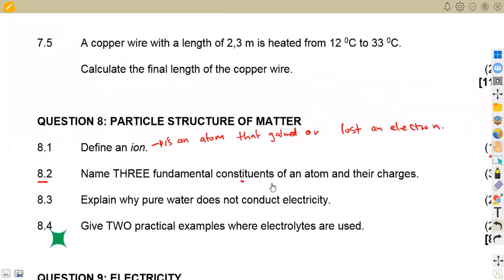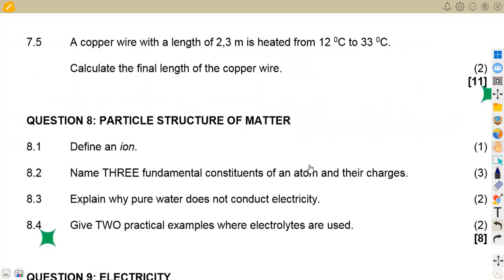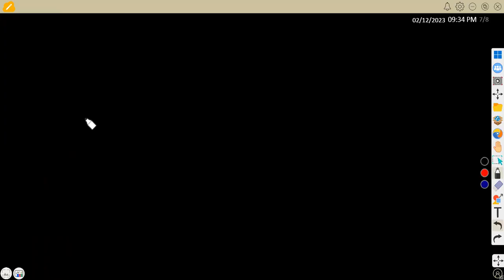8.3, we are given now to explain why pure water does not conduct electricity. Why is it that pure water does not conduct electricity? So this is what we have for the pure water. There are actually no charged ions in pure water to conduct electricity. So pure water is a good insulator.